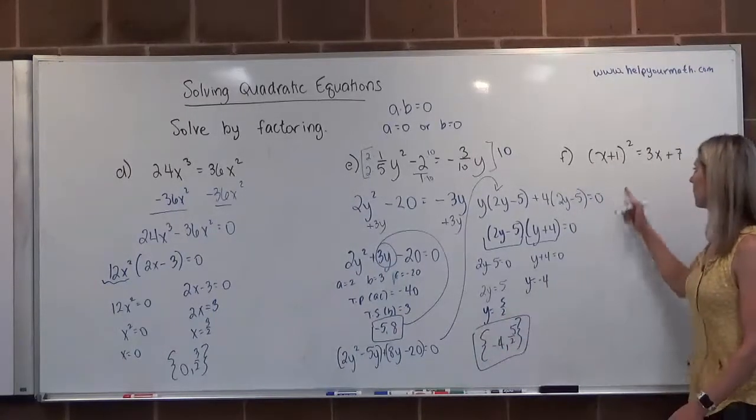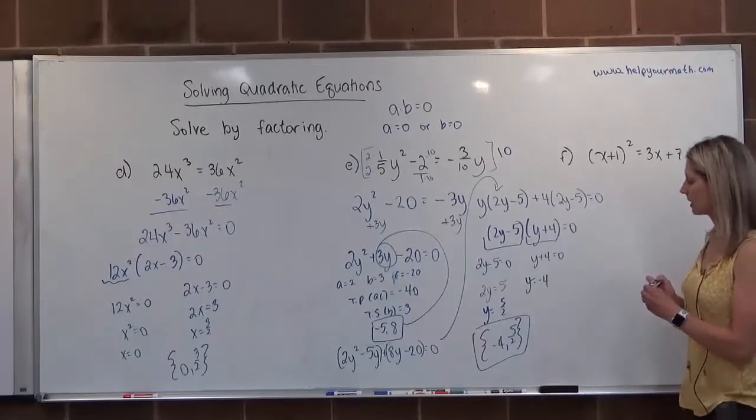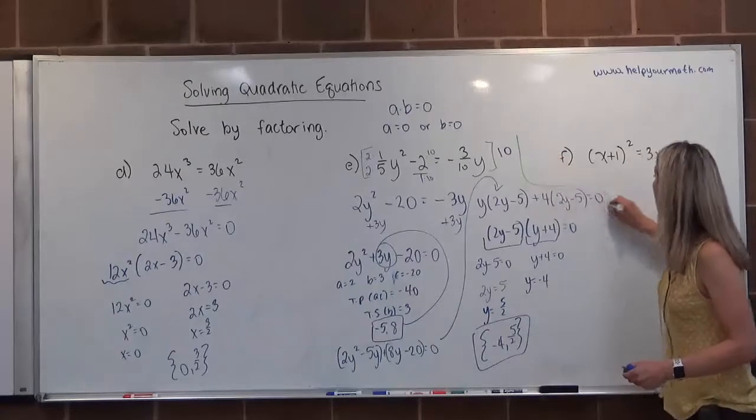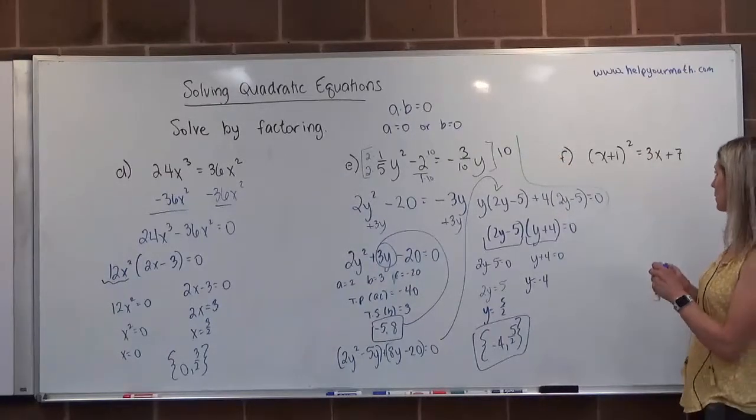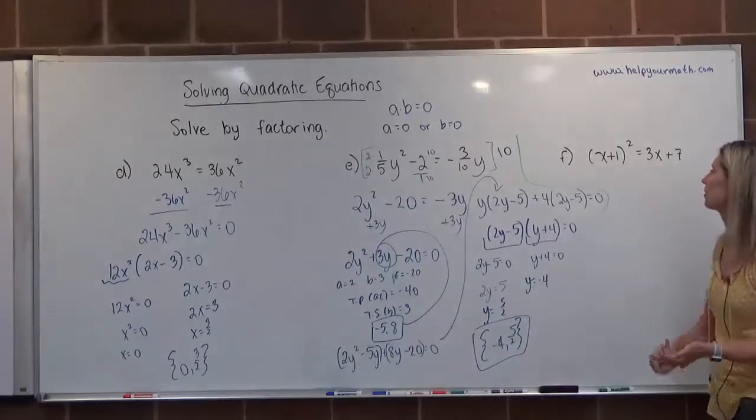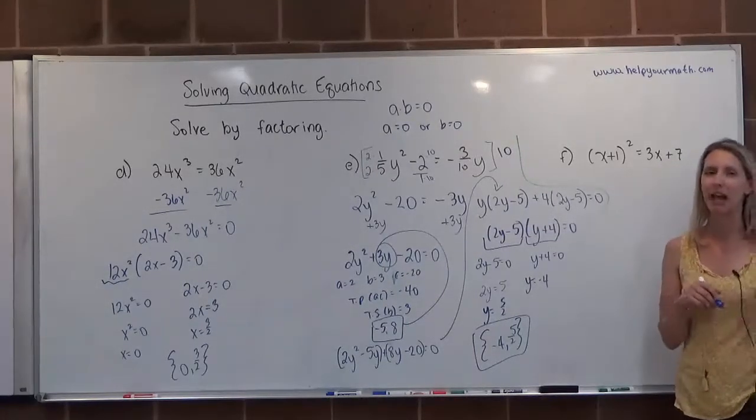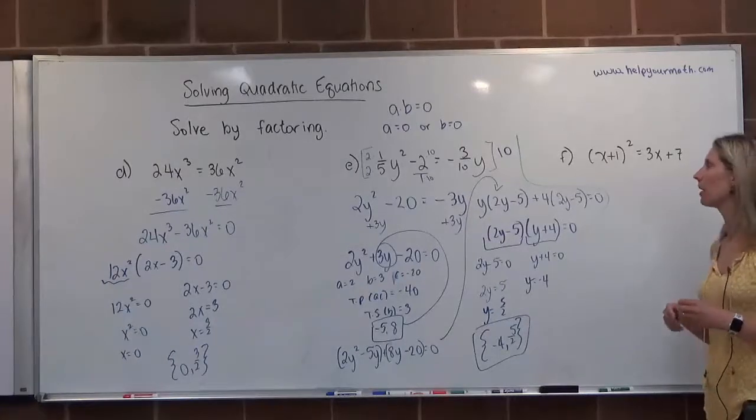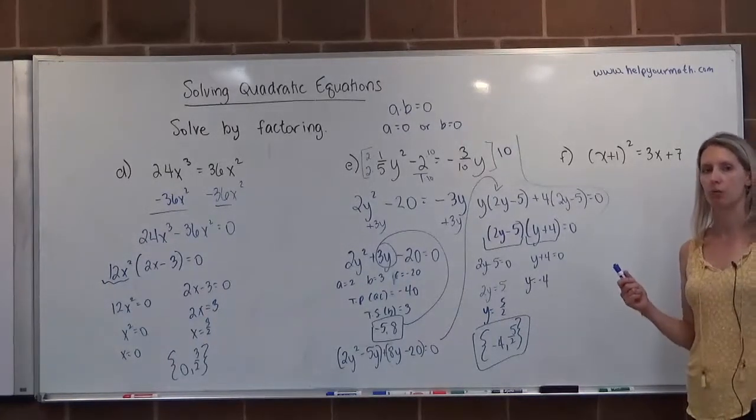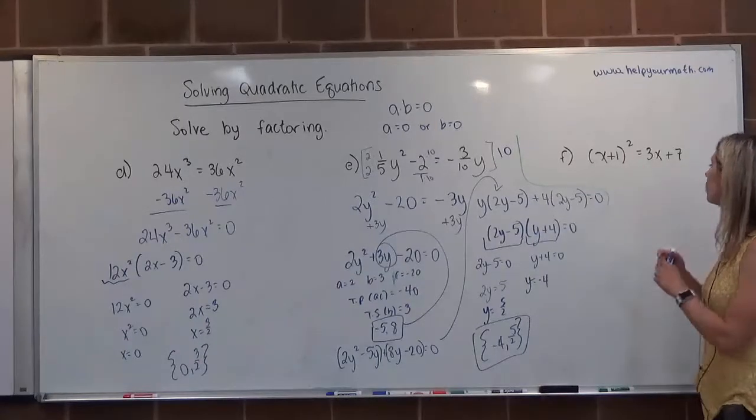Moving on to our last one, letter F. For this one, we have x squared, x plus 1 squared equals 3x plus 7. We have a lot of work to do. First, it's not set equal to 0. Second of all, we actually have to expand that. We can't leave it as x plus 1 quantity squared. The good news is that we should know a shortcut. This is a binomial square. When we expand it, it will be first term squared plus multiply the 2 and double it plus the second term squared.